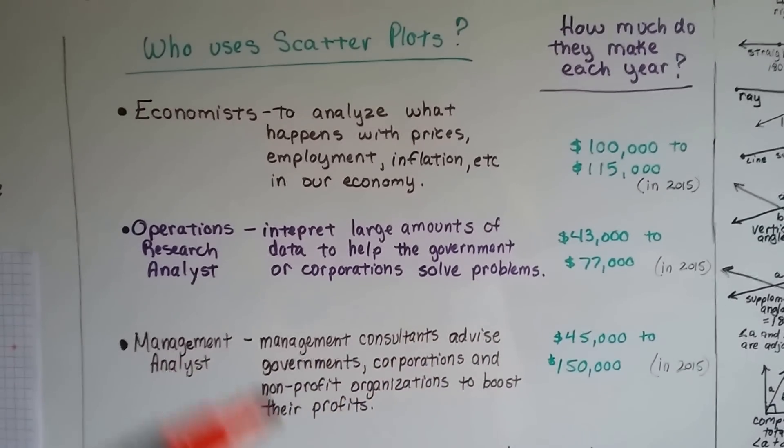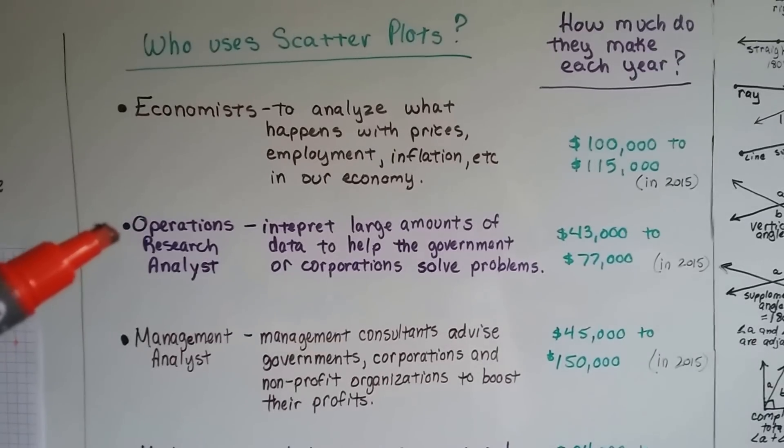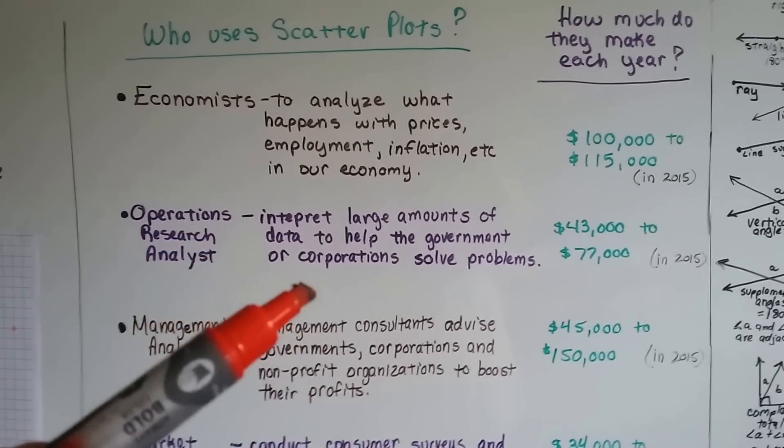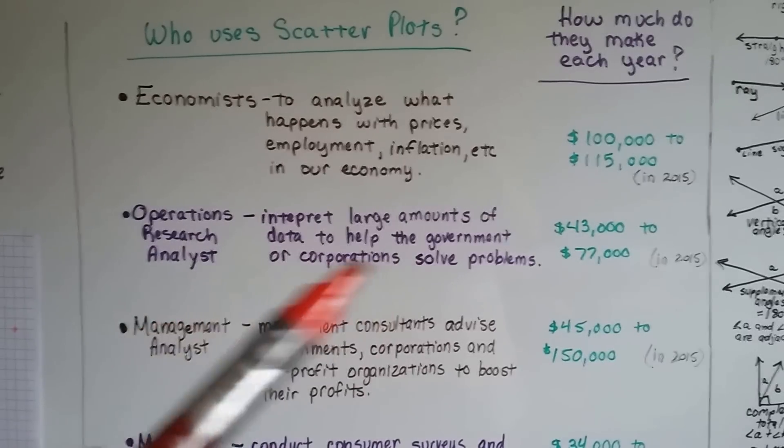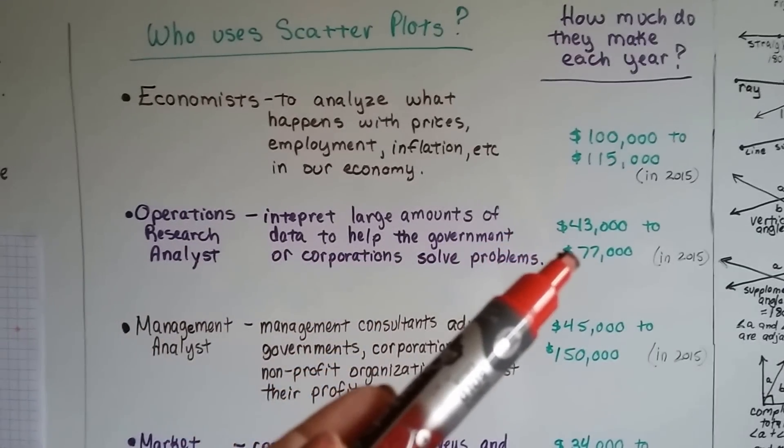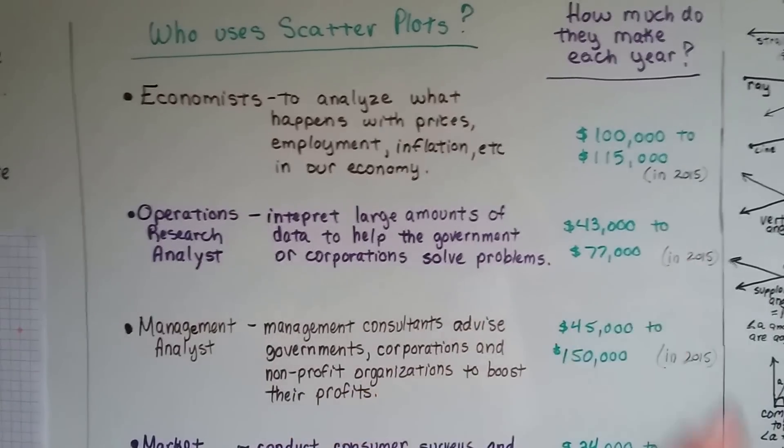That's a pretty good job. An operations research analyst, they interpret large amounts of data to help the government or corporations solve problems with their businesses. And they make about $43,000 to $77,000 a year in the year 2015.